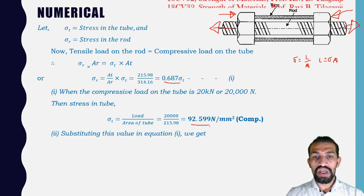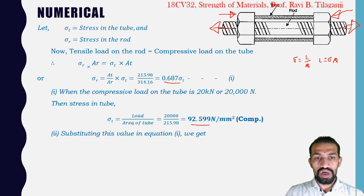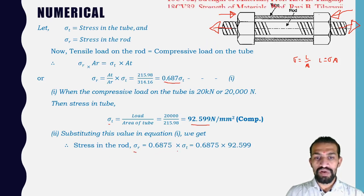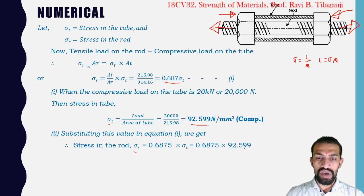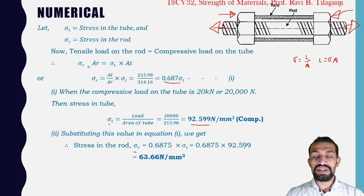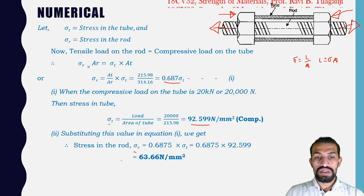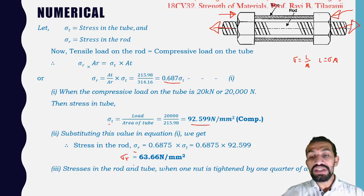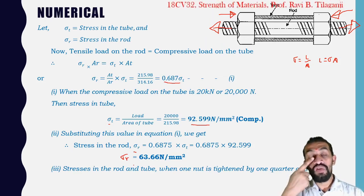Substituting σT into the equation: σR = 0.6875 × 92.59 = 63.66 N/mm². So stress in the rod is 63.66 N/mm² (tensile) and stress in the tube is 92.59 N/mm² (compressive).